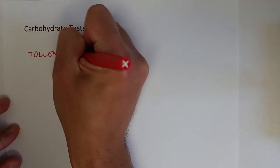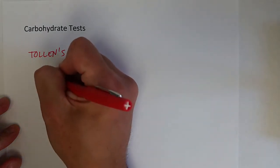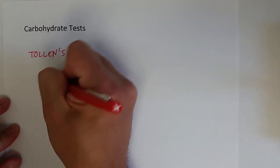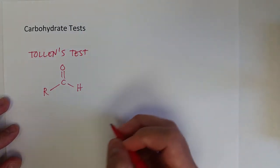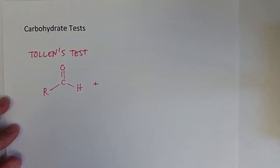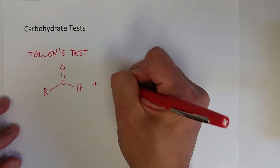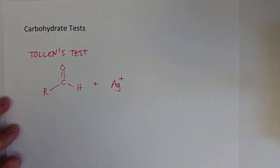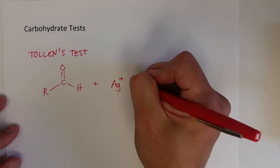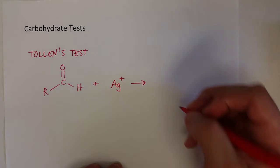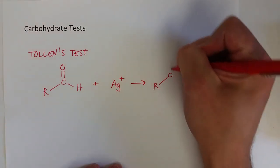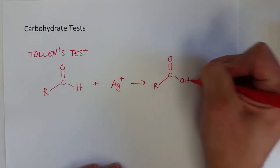The next test is a very similar one. It's called the Tollen's test, and it can again test for reducing sugars. So if you've got an aldehyde on the end of a monosaccharide or some other aldehyde, it will actually cause the production of silver.